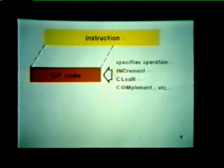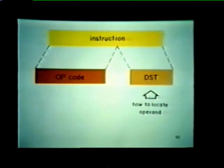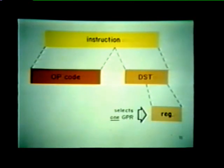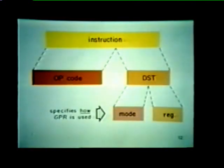Let's assume the CPU has decoded an increment instruction. The CPU now knows that it is to perform an increment operation. However, it must also be told how to locate the value, or operand, that is to be incremented. This function is handled by the remaining portion of our instruction — we call this part the destination field, or DST. The destination field contains essential information that tells the CPU how to locate the operand. Three of the six bits in the destination field select any one of the eight general purpose registers, while the other three bits tell the CPU how that GPR is to be used so the operand can be located. We refer to this as our addressing mode.